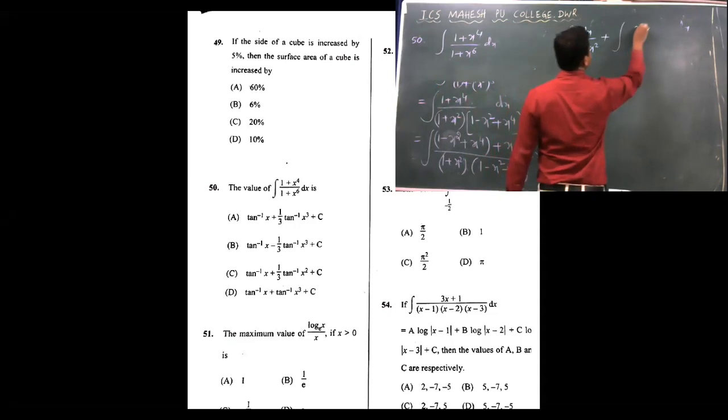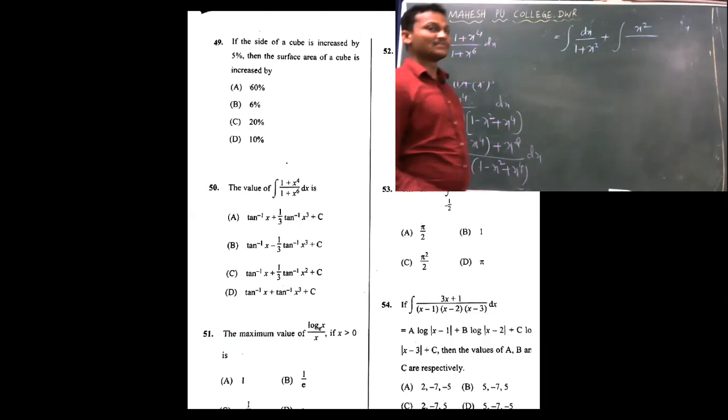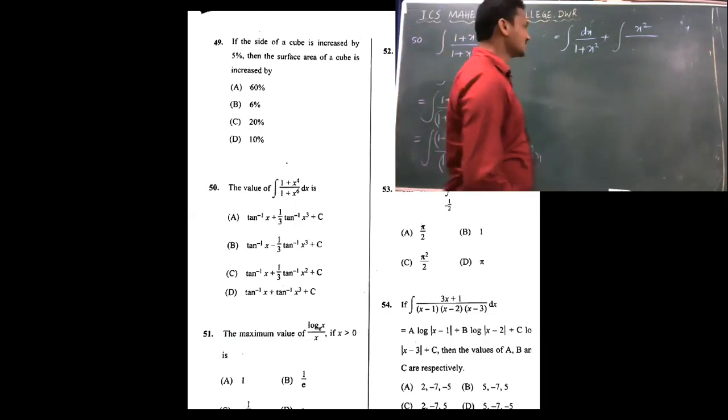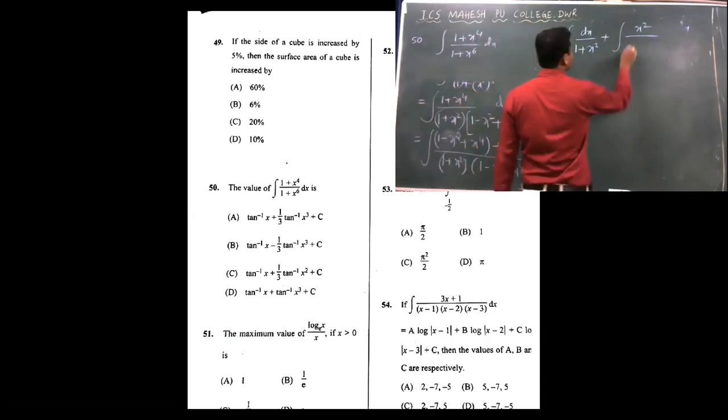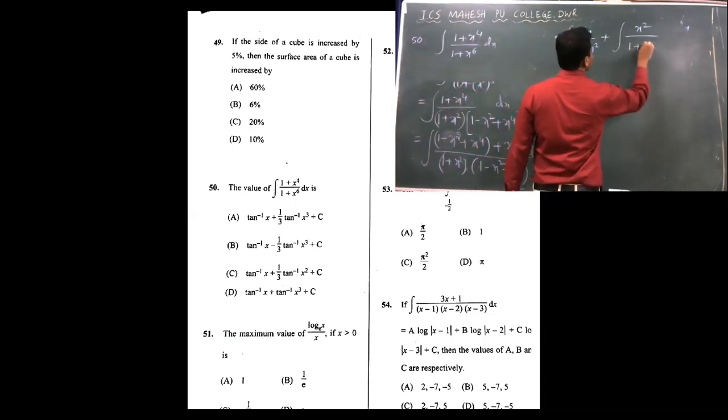This x² as it is, I will write the denominator term. It is of the form (a + b)(a² - ab + b²), which is nothing but a³ + b³. So a³ + b³ gives 1 + x⁶, that is 1³ + (x²)³ = x⁶.